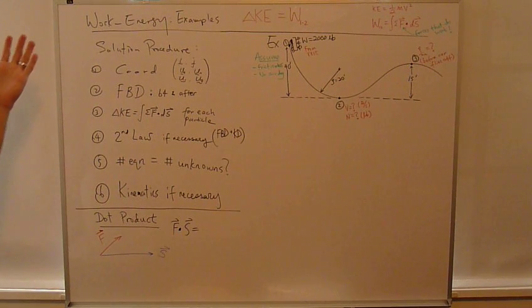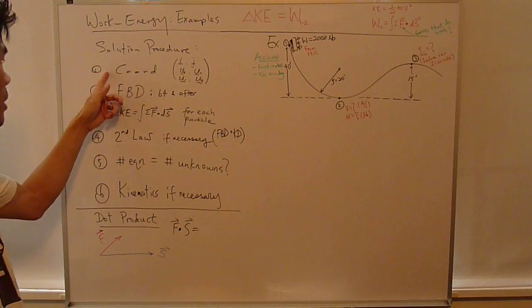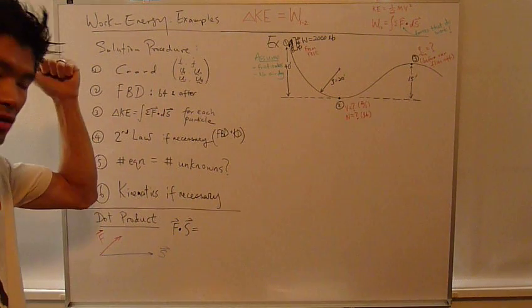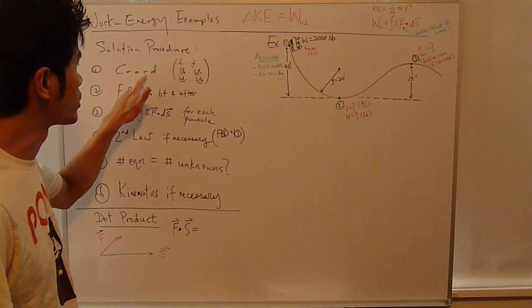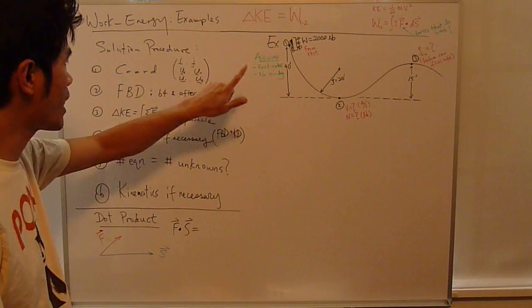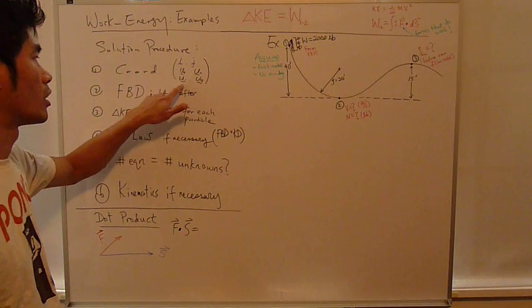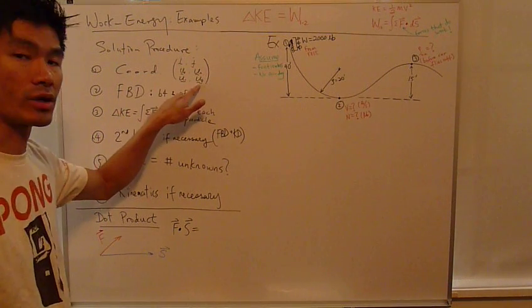The general solution procedure. Step one, just like Newton's law method, you choose a coordinate system. Whether it's Cartesian coordinate I, J, K, or tangent normal, or radial transverse coordinate system.